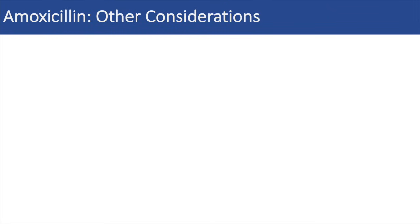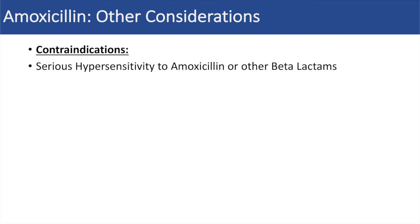So if we have determined that a bacteria is sensitive to amoxicillin, are there any reasons why we wouldn't use it? What are some of the contraindications of amoxicillin use? Well, one of the main reasons why we wouldn't use amoxicillin is if the patient has exhibited a previous history of serious hypersensitivity to amoxicillin or other beta-lactams, including anaphylaxis or Stevens-Johnson syndrome. If the patient has presented previously with these types of hypersensitivity to amoxicillin or other beta-lactam antibiotics, we would not use amoxicillin.